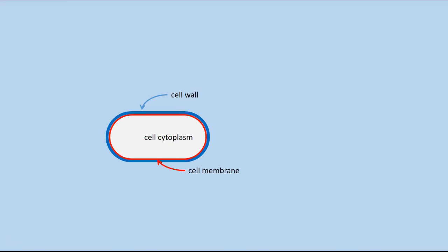Let's start by defining the term cell envelope. The envelope is the combination of the cell membrane and the cell wall. The bacterial cell membrane component of the envelope is pretty much the same for all bacterial cells.